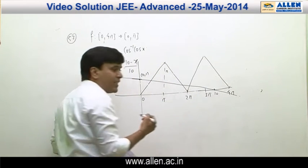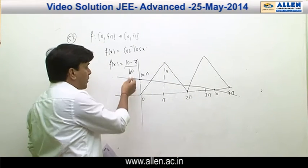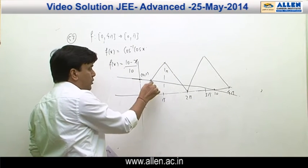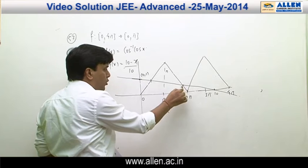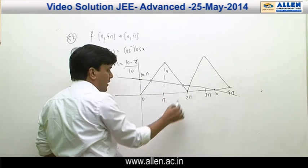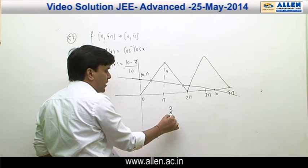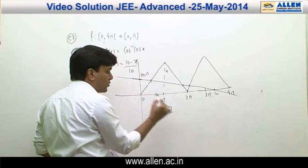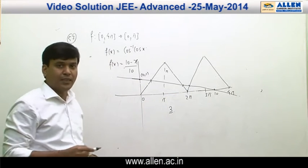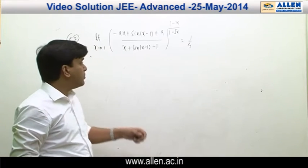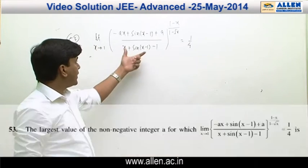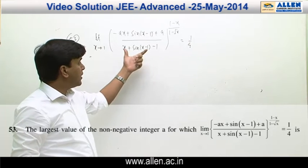We can see the number of intersections of these two graphs is 1, 2, 3. Hence the correct answer for this question is 3.